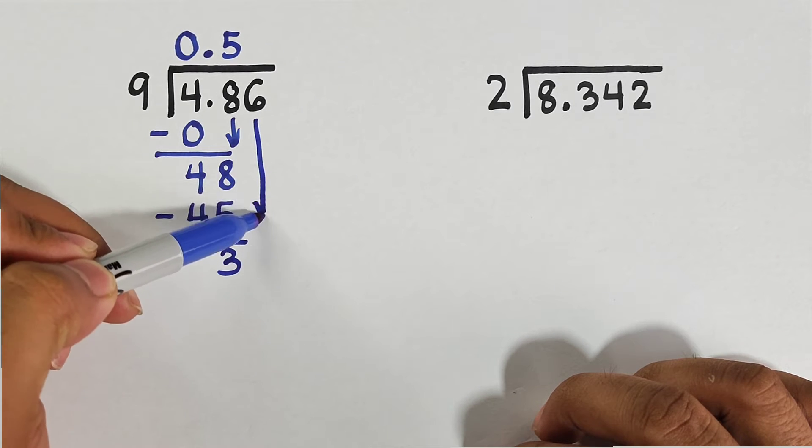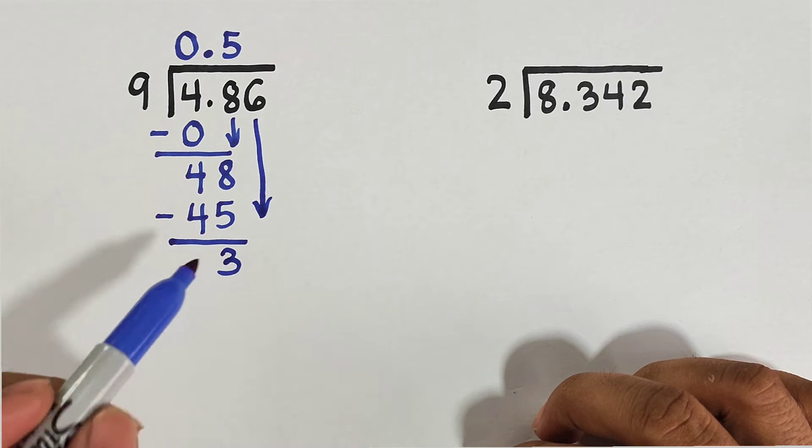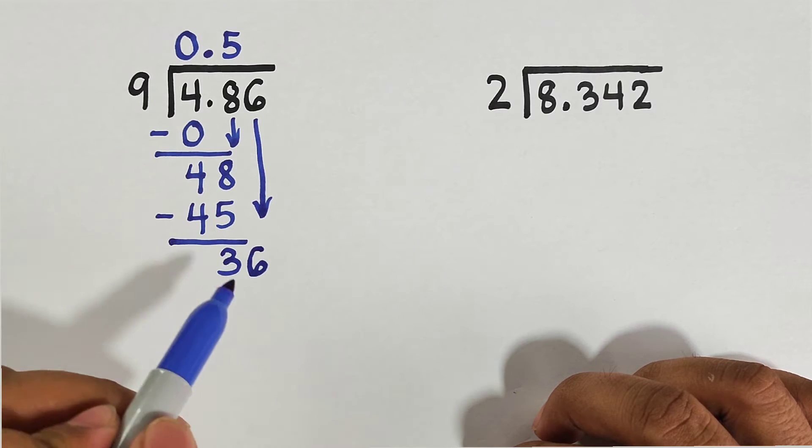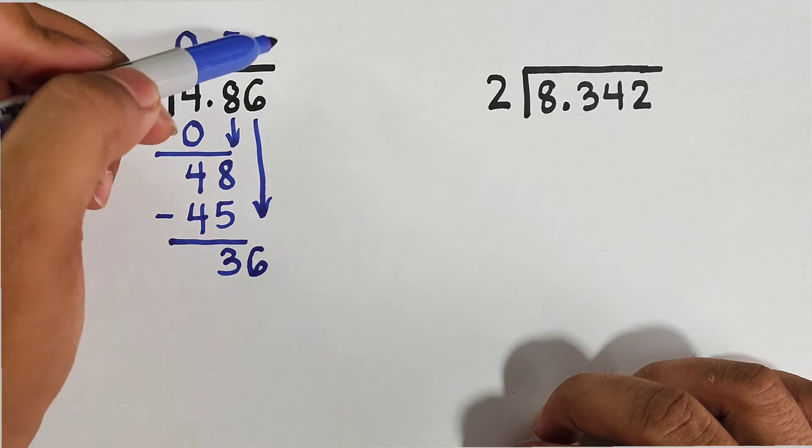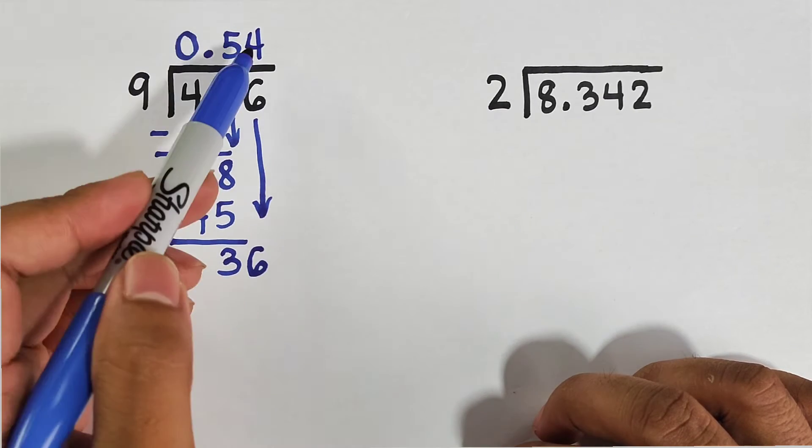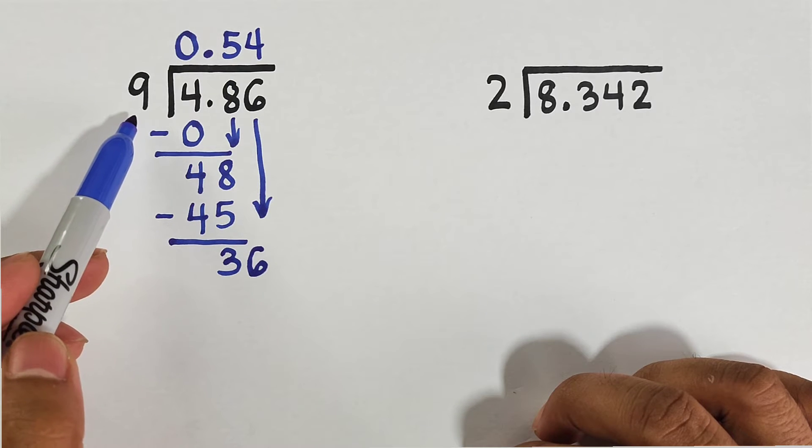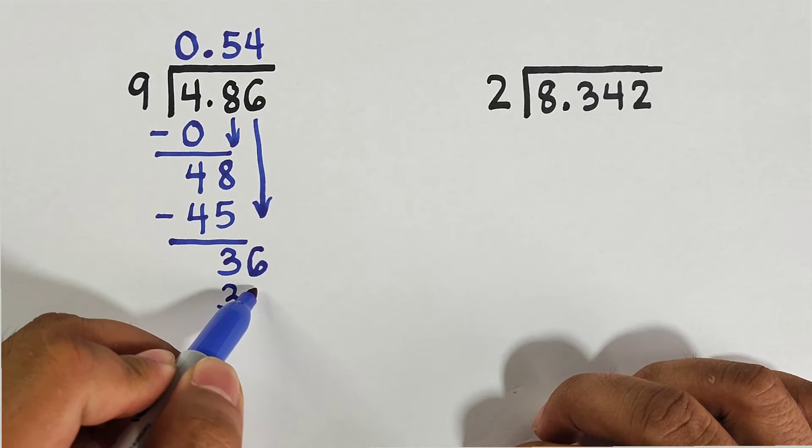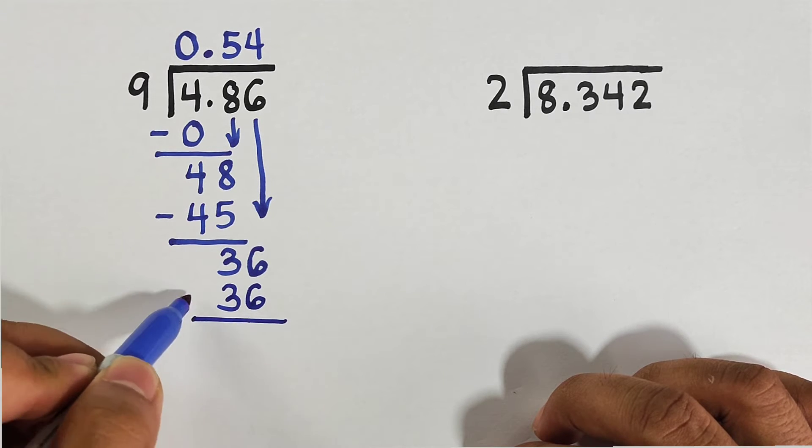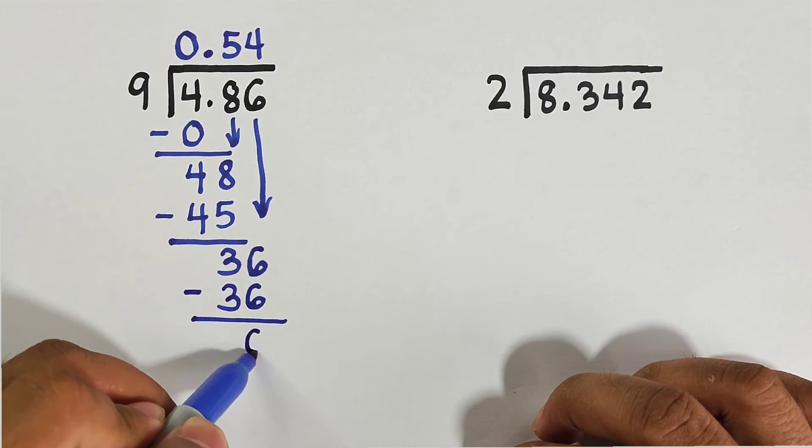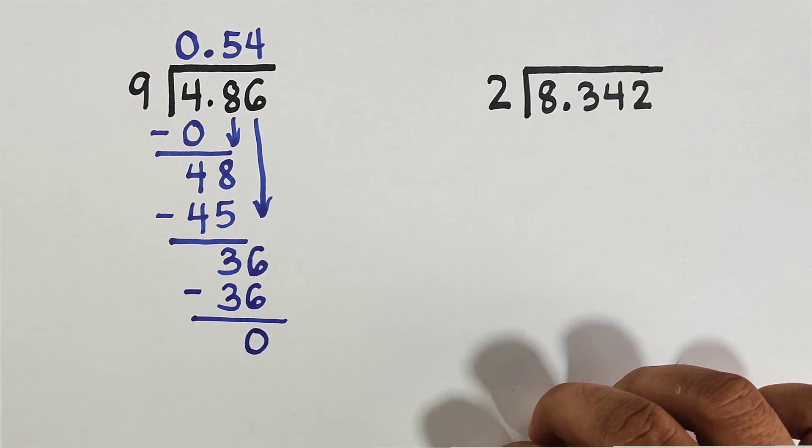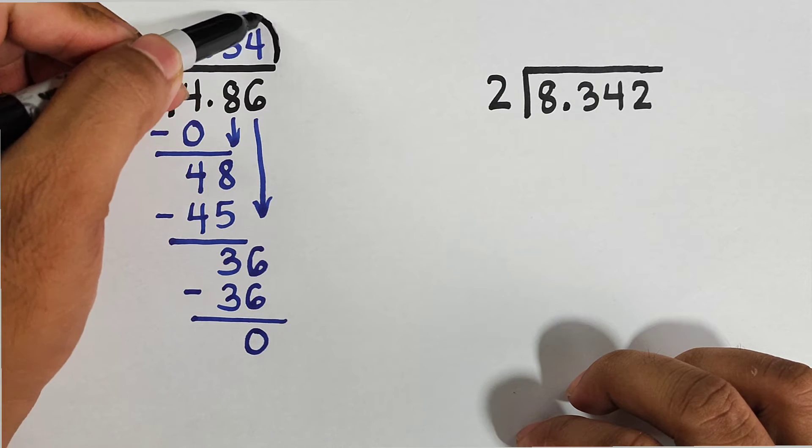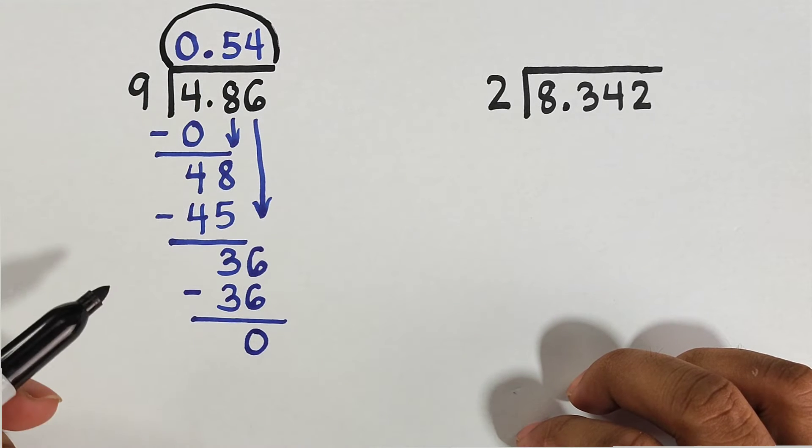Then we will subtract 48 minus 45, equals 3. Then we will bring down 6 here. It will become 36. This is our new dividend. 36 divided by 9 is 4, and this 4 to be multiplied by our divisor 9. 4 times 9 equals 36.